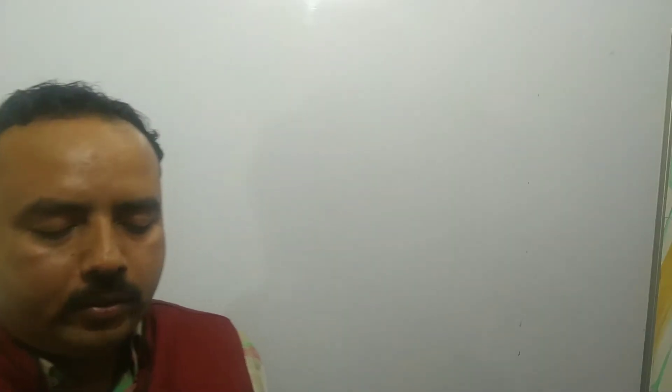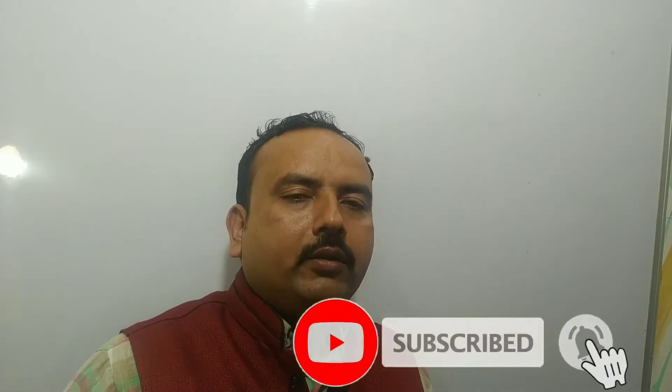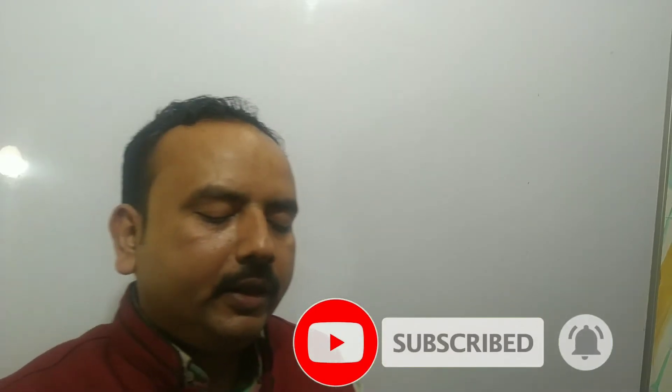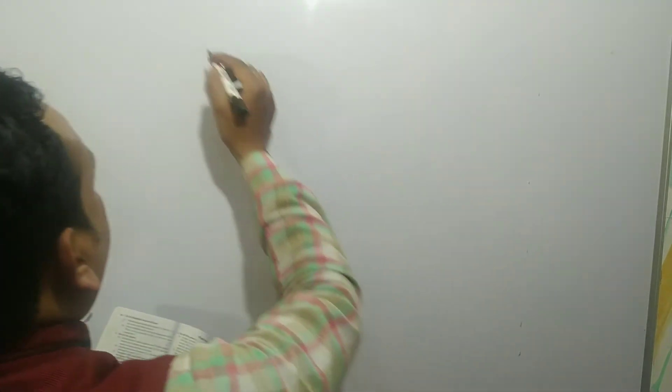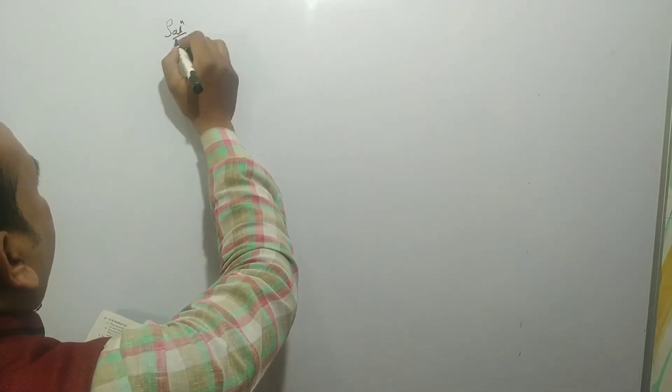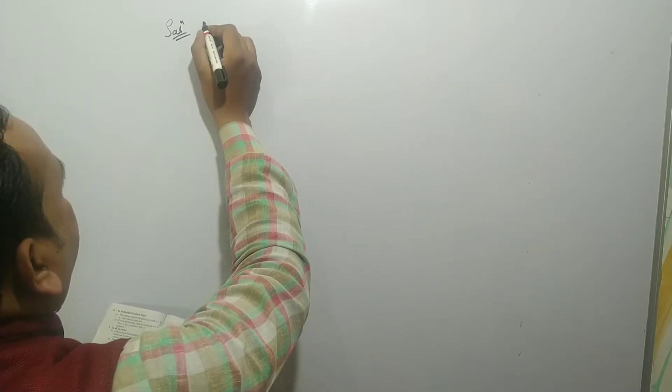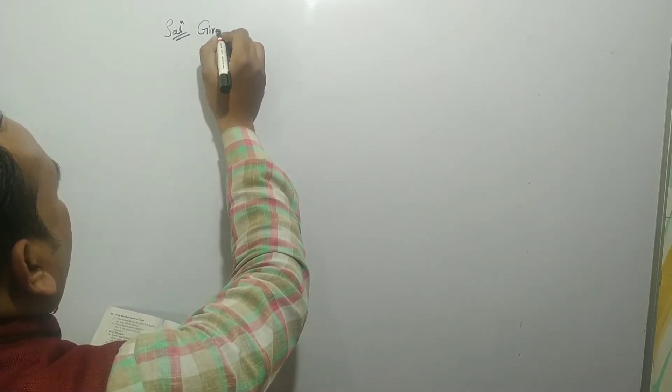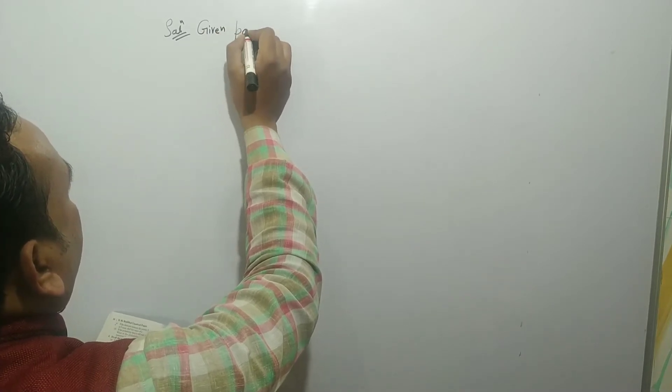Let us do the problem of coordinate geometry. The question is: if the distance between the points (5, -3) and (x, -1) is 5 units, find the value of x. Question में कह रहे हैं कि यदि points (5, -3) और (x, -1) के बीच की दूरी 5 मात्रक हो, तब x का मान ज्ञात करें। यह एक easy problem है। इसमें आपको points के coordinates given हैं।